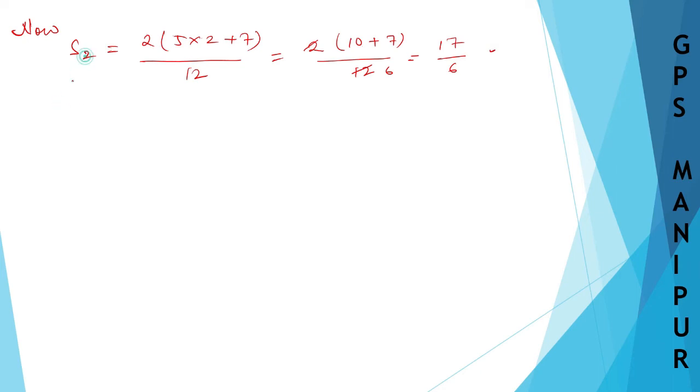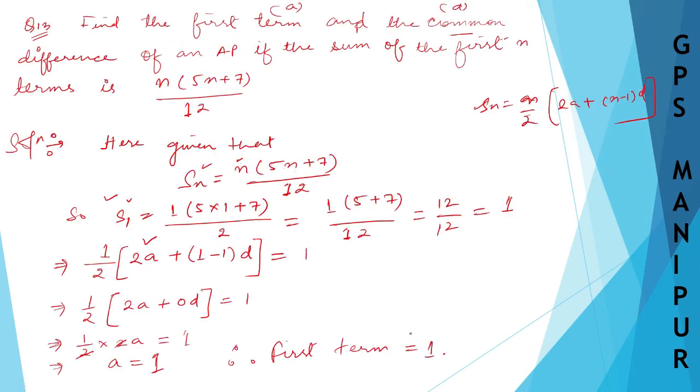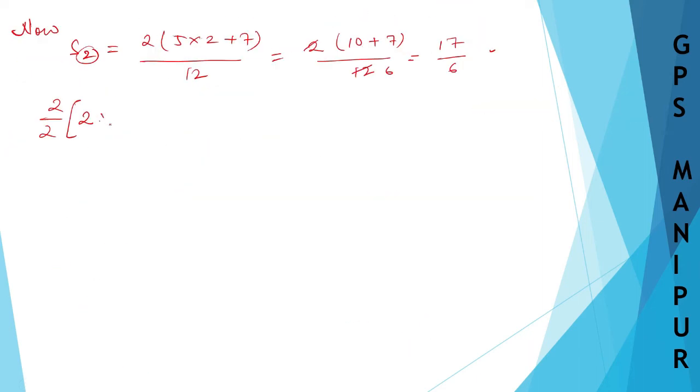Now, the formula for S2 is N divided by 2. N here is 2 divided by 2, 2A, 2 into A. What is A? A, we got the first term A is 1. So, put here 2 into 1 plus N minus 1.